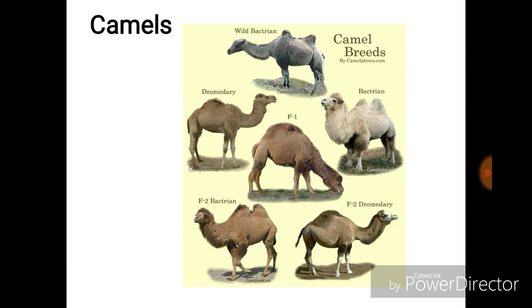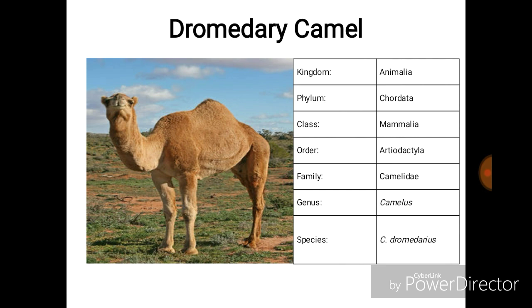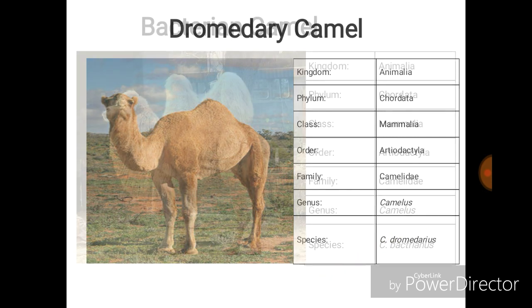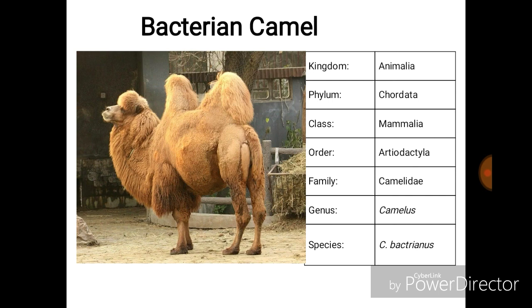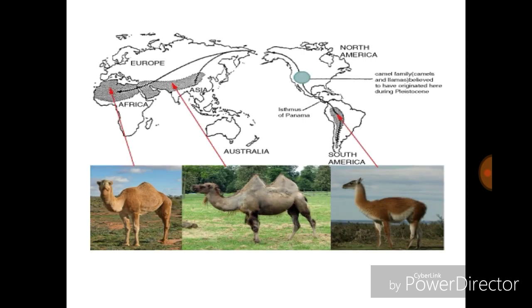Here you can see different breeds. This is the dromedary camel classification and the Bactrian camel classification. This is a review of how, from North America, the evolutionary stages of the camel migrated through different land bridges.